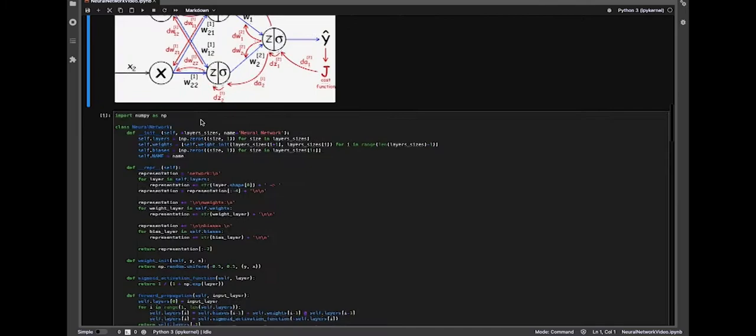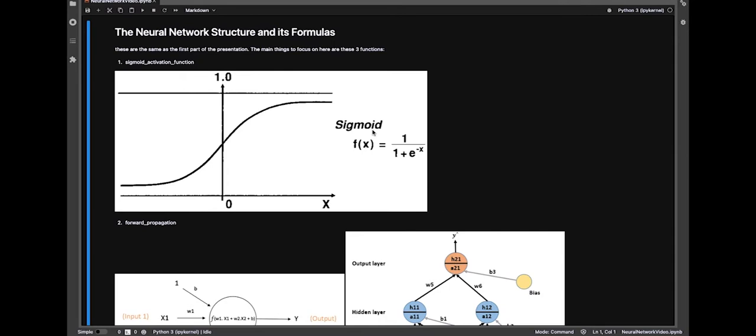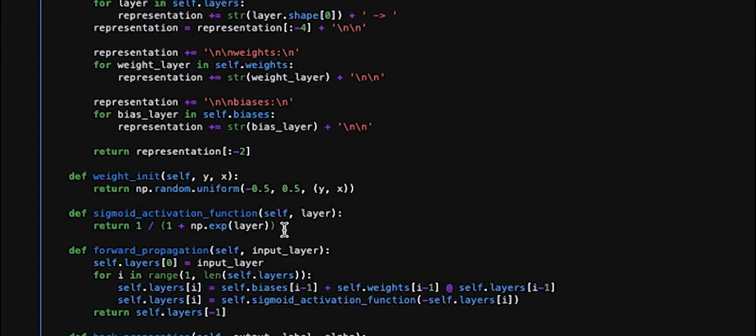So the most important things to note here are the activation function and forward propagation. So I chose to use the sigmoid activation function, which looks like that, but essentially all you need to know is that it squishes the range from negative infinity to positive infinity to zero to one. And this is what it looks like in the code, essentially the same as the actual math.